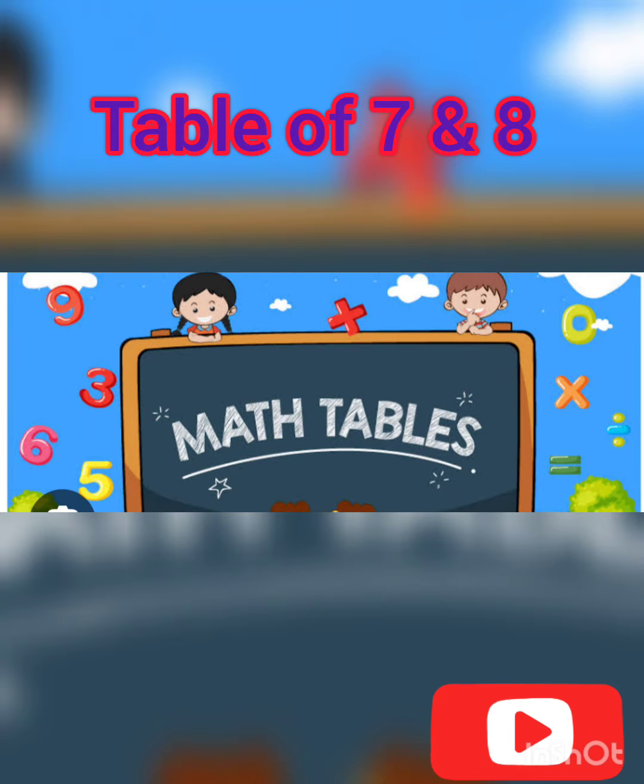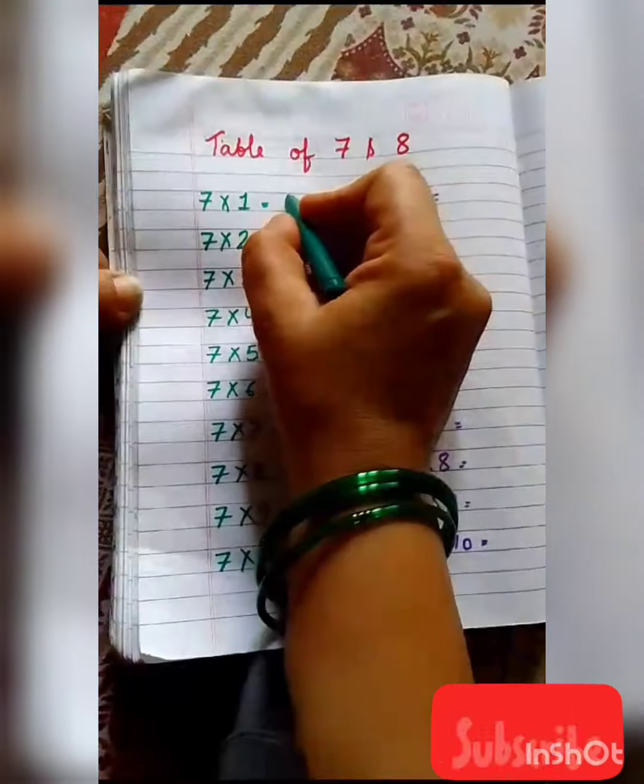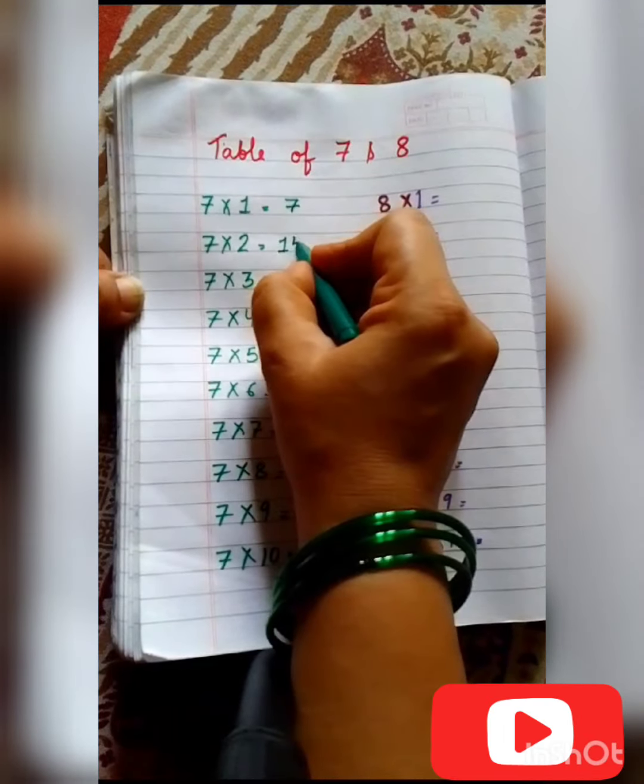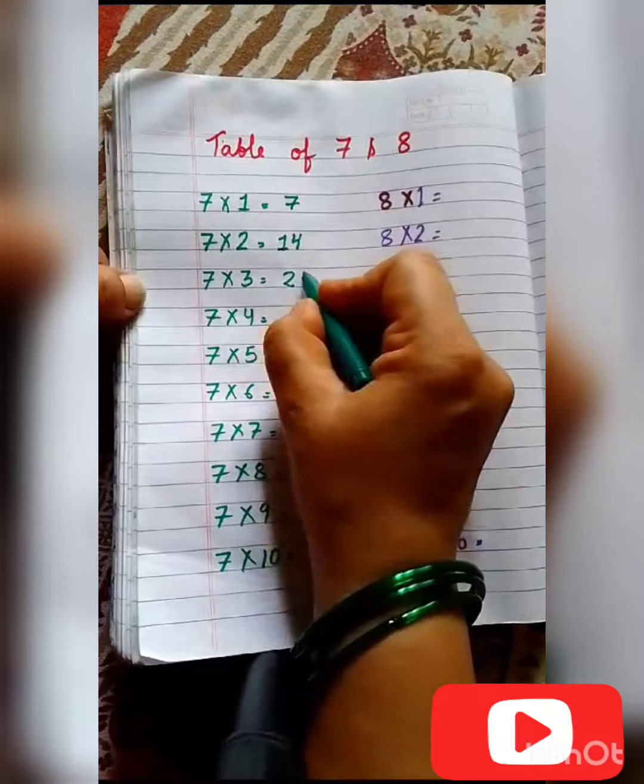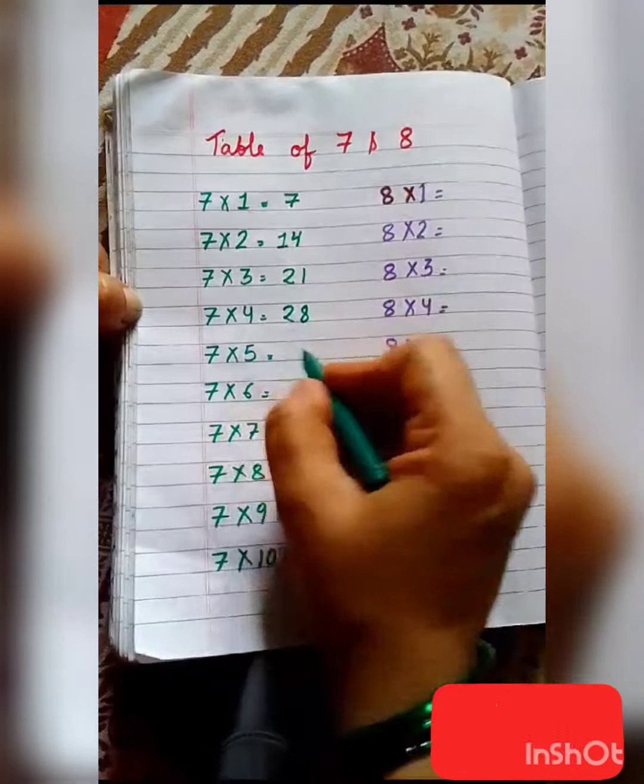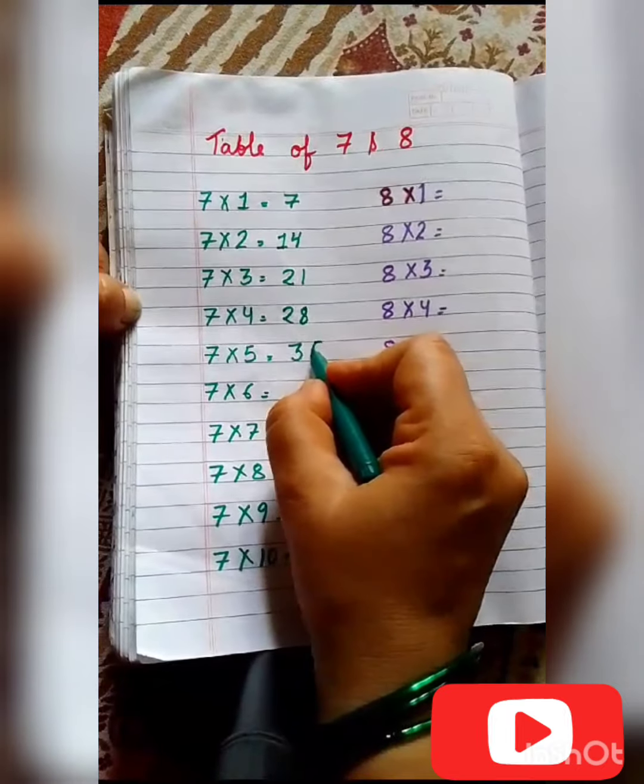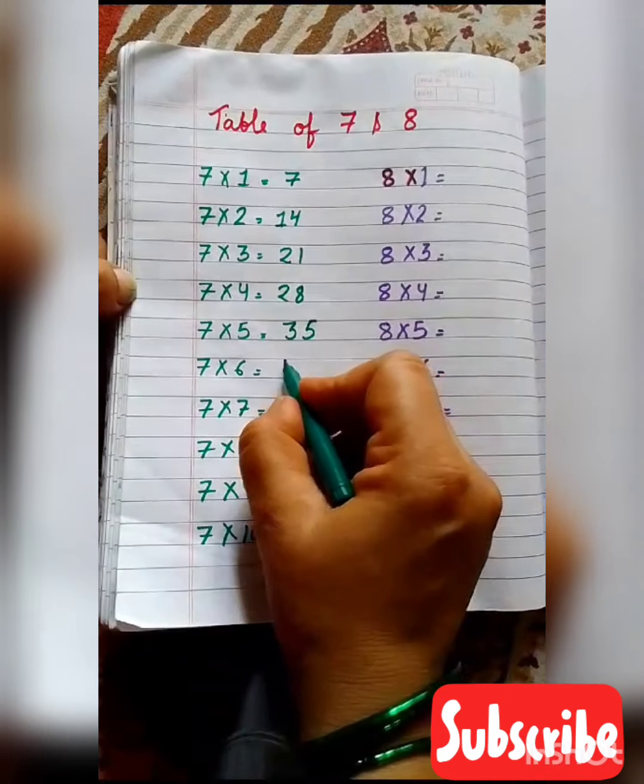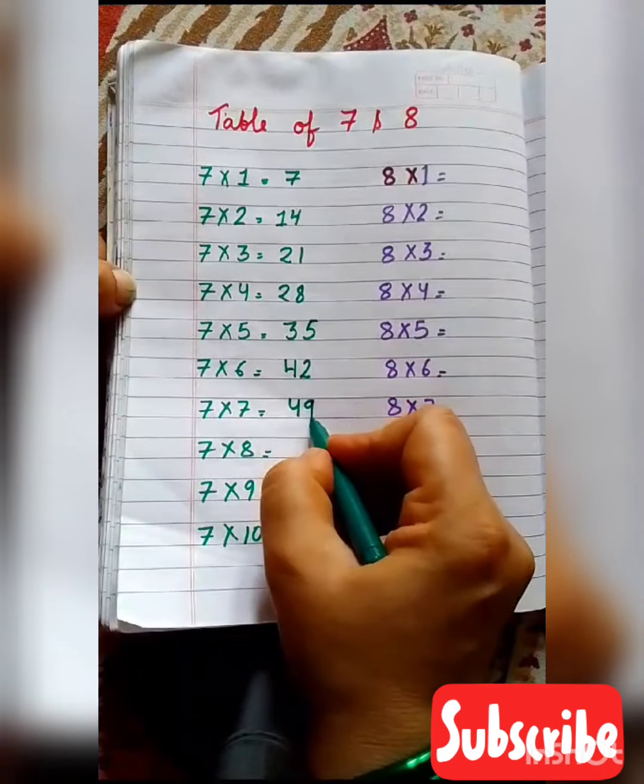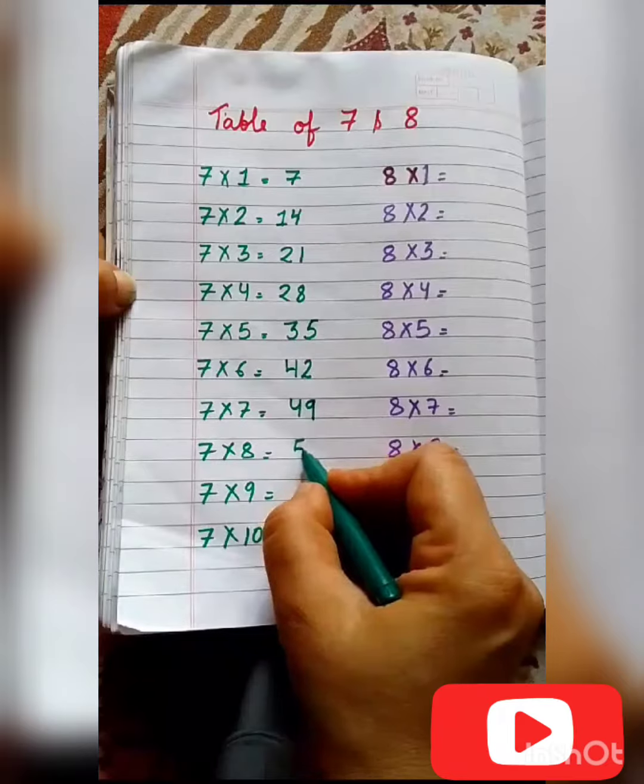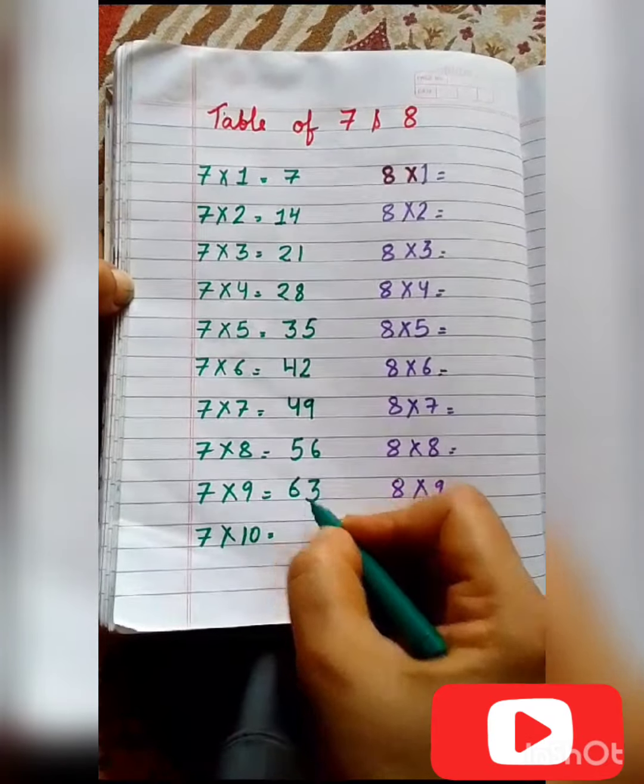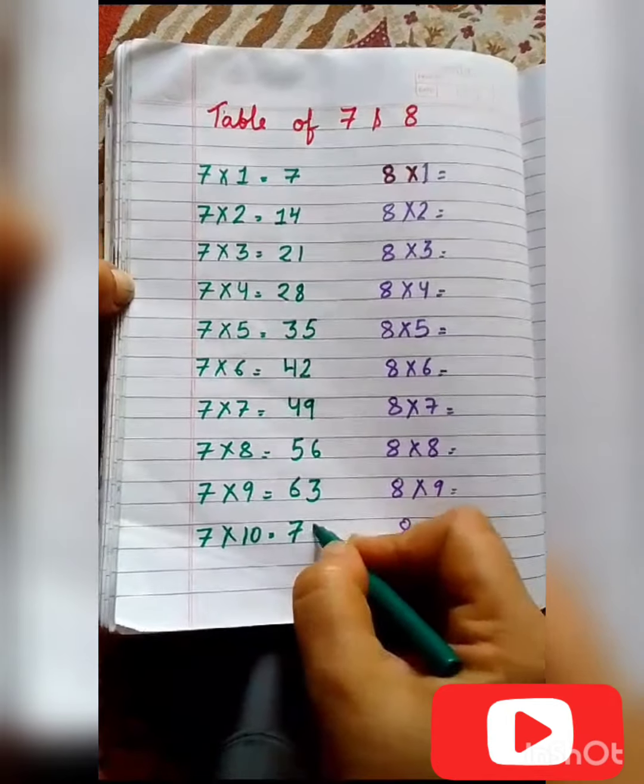Today we write the table of 7 and 8. 7 eights are 56, 7 nines are 63, 7 tens are 70.